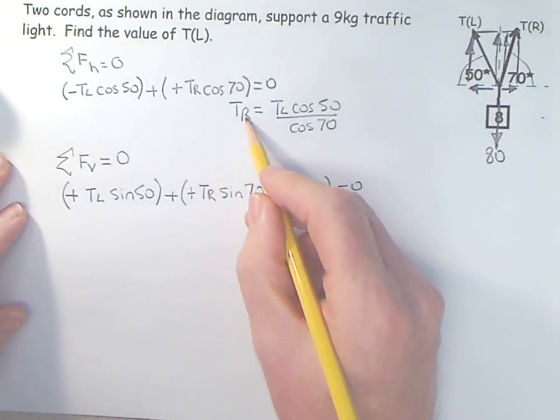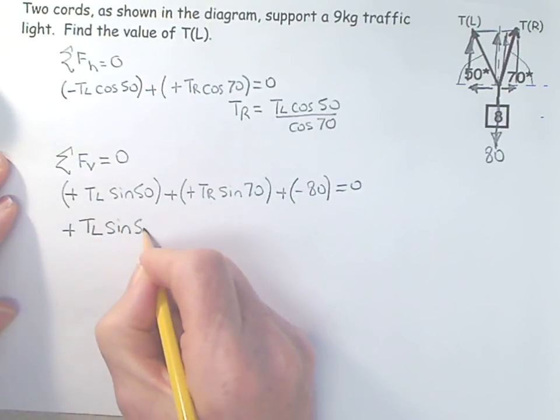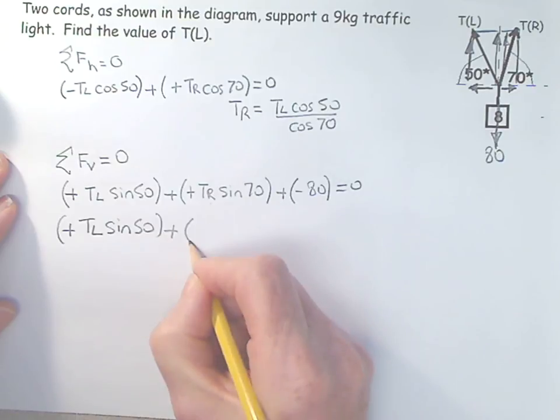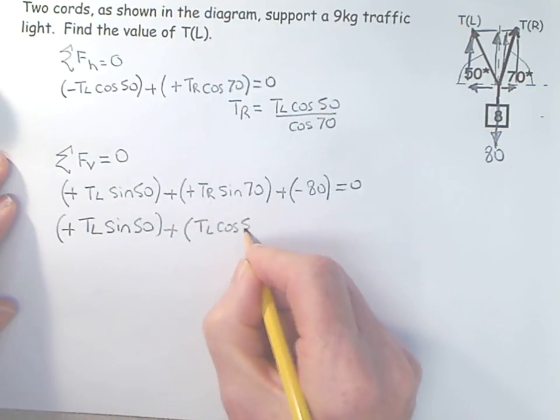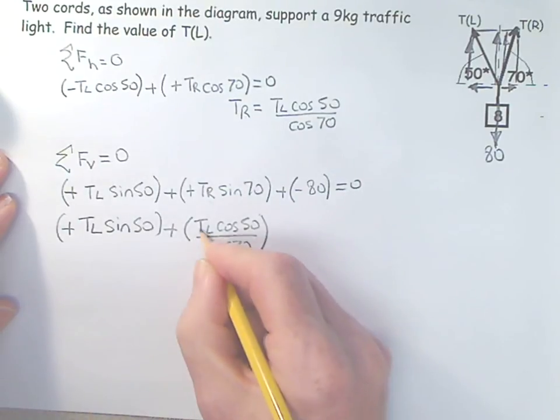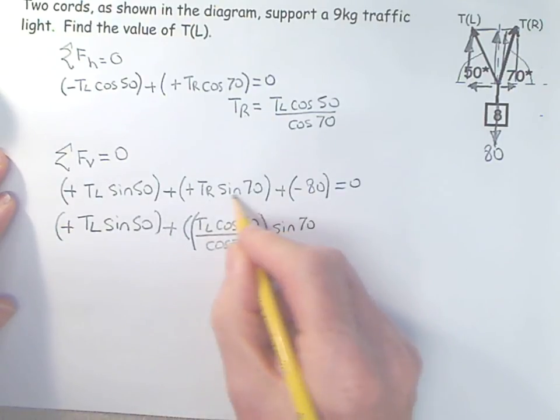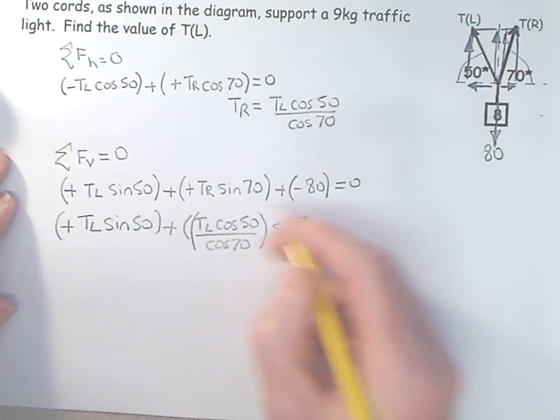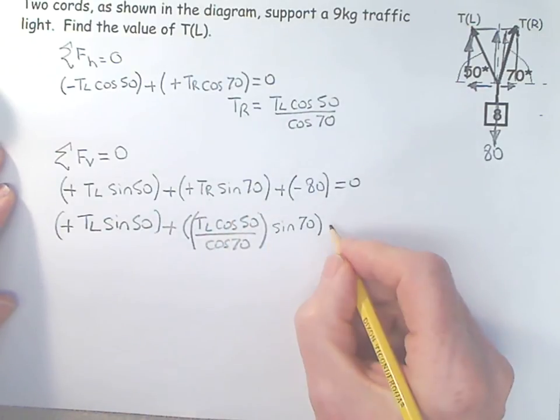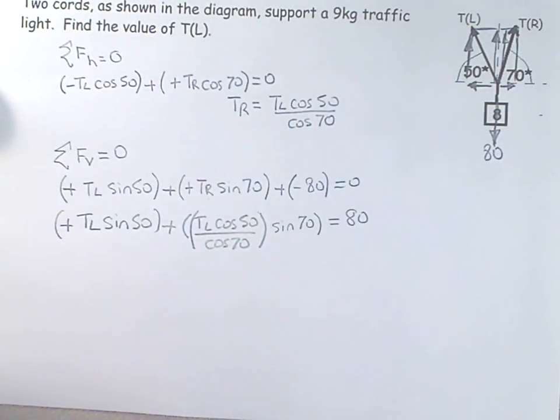I have a term for TR so let's just substitute that in. And TL sine 50 added to TL cosine 50 over cosine 70 times sine 70. A lot of people forget that sine 70. They're so concerned about doing this substitution they forget about that sine 70. And let's put the 80 to the other side. So this just looks complicated but they're just fractions. They're just like numbers less than 1. So I'm going to go sine 50. So sine 50 equals.